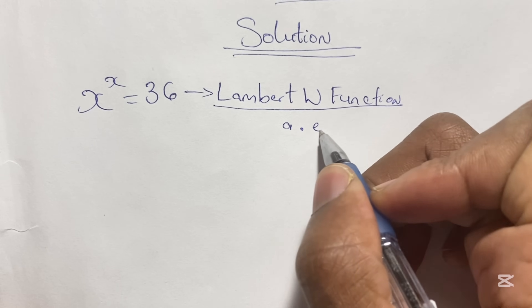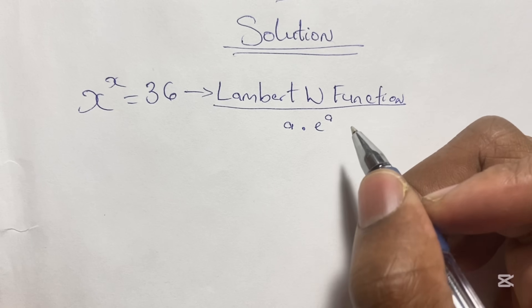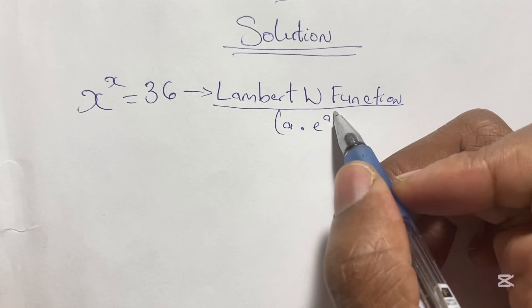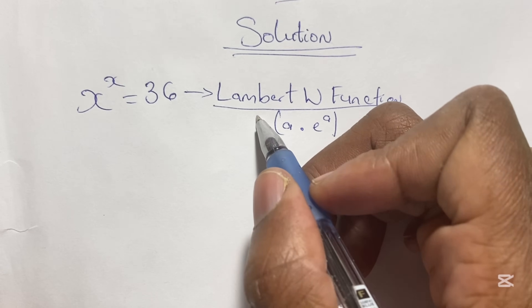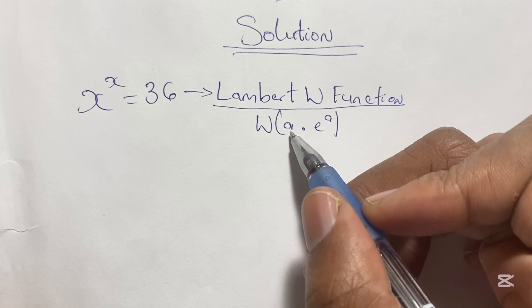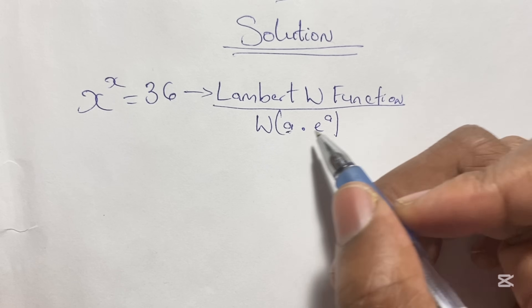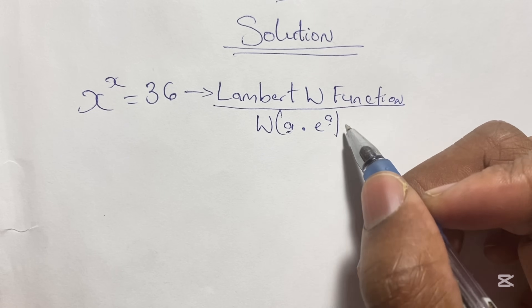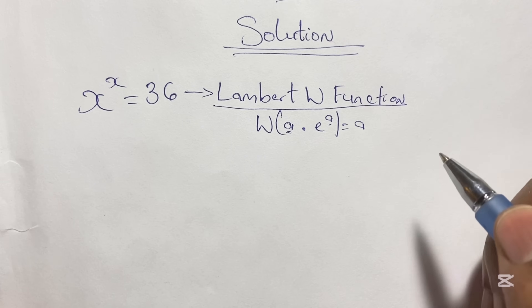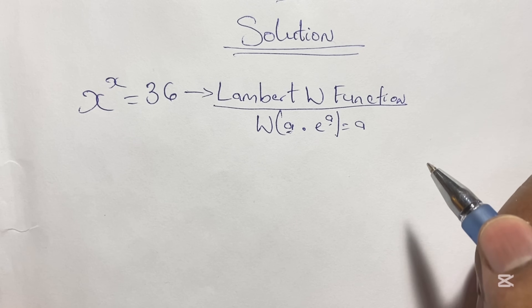So how this works is that if we have an expression such as a times e to the power of a — where you see a in the base and also in the power — if you apply a W function to this expression, the result is just a.